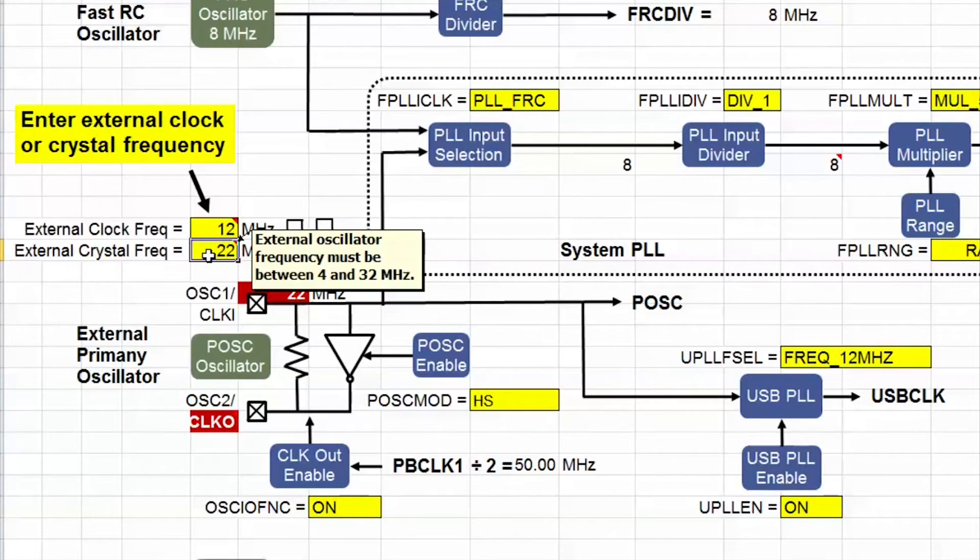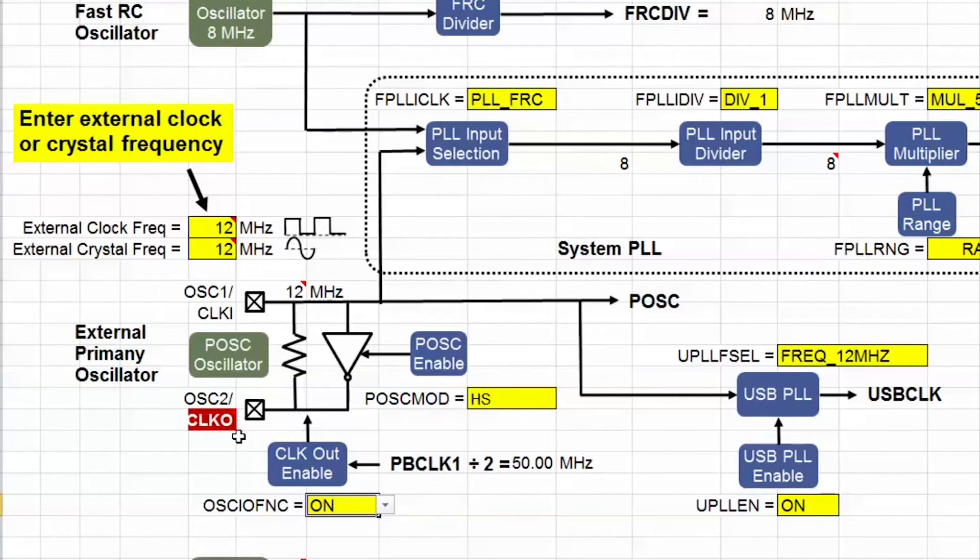If I change the input frequency to 12, one of the red boxes disappears. You can see I still have another problem to deal with.